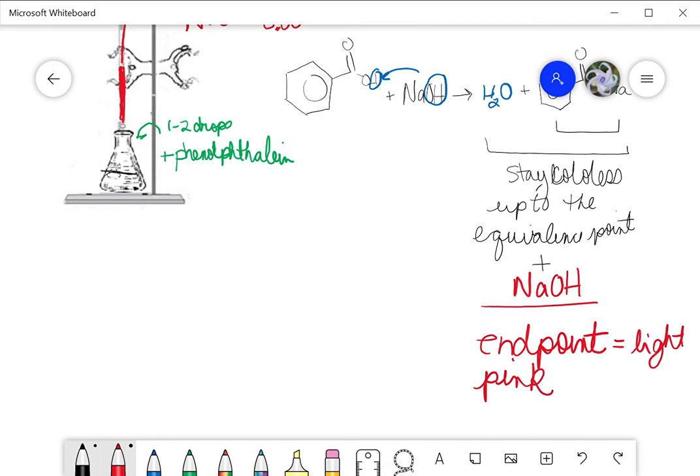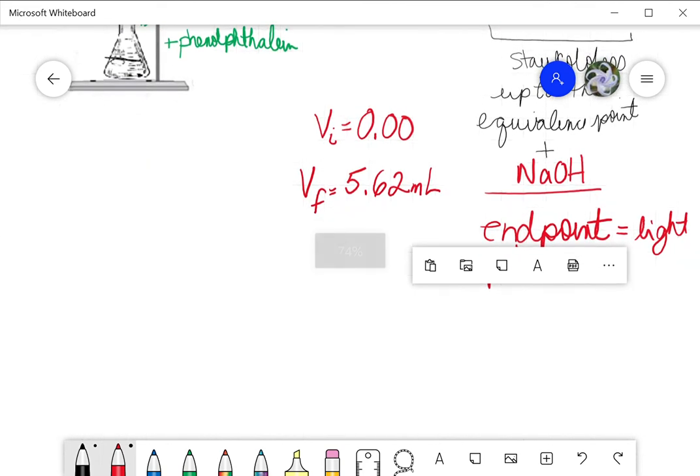That's going to be helping us understand how much benzoic acid was in there. So I need to know what the volume was. When I started, I can pretend that my initial volume maybe was exactly at 0.00, and then maybe my final volume was at 5.62 milliliters. So I need both of those different pieces of information so I can go back and figure out what the concentration was, or the number of moles of my benzoic acid, and the number of milligrams of benzoic acid.